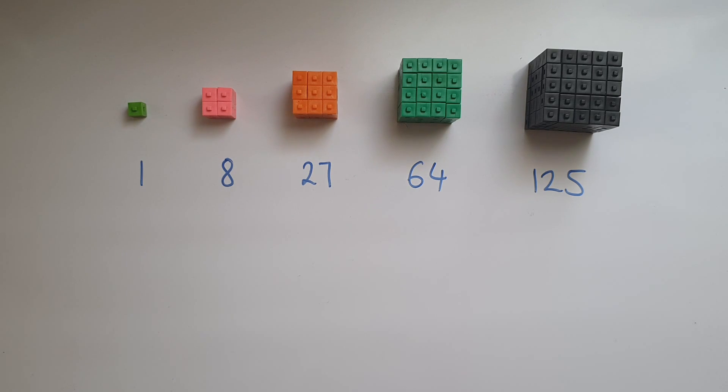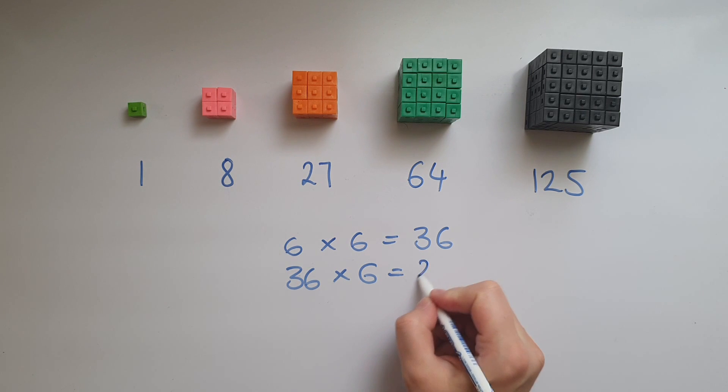But you can also work out the cube of 6, 7, 8, 9, and so on—any number, as long as you multiply it by itself 3 times. So if we do 6 times 6, that gives us 36, and then 36 times 6, which is 216.